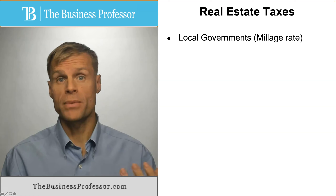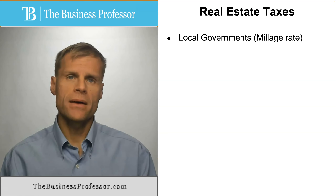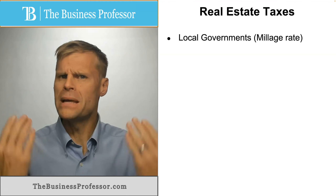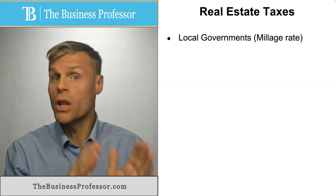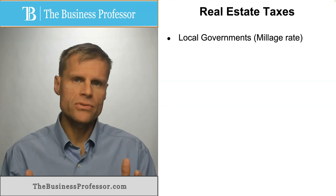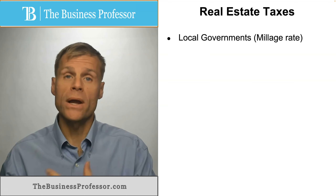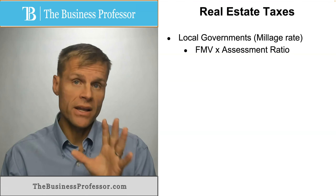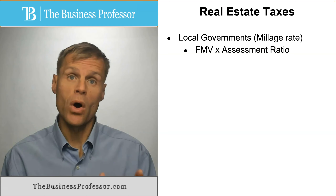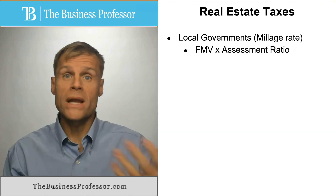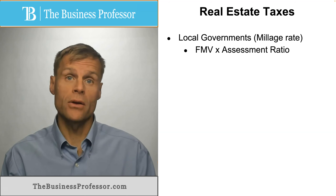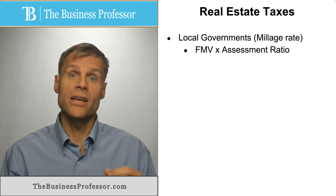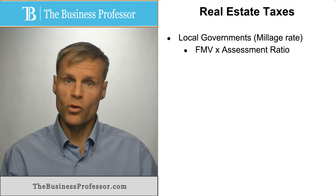To start with number one, property taxes — we oftentimes call property taxes the millage rate assessed by the local government. Millage rate is an antiquated term, but basically what it says is that you take the fair market value of the real estate that you own, multiply by some ratio factor assessed by the local government, and that gives you a fixed value that you have to pay for owning that property.